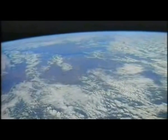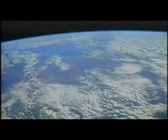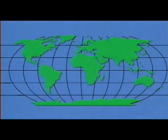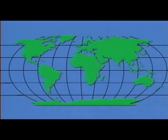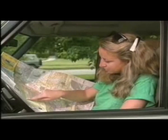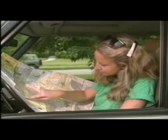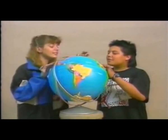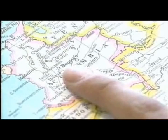Each hemisphere is half the earth. A map is a flat drawing of the earth or part of the earth. Since the earth is round and not flat, a globe is a more accurate way to show the earth. But maps are useful too — they are easier to carry than globes. Also, a map can show you the whole world at once, while with a globe you can only see one side at a time. Maps contain a lot of information to help you use them.